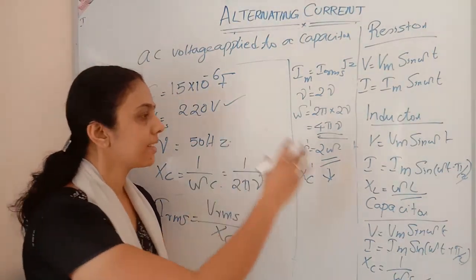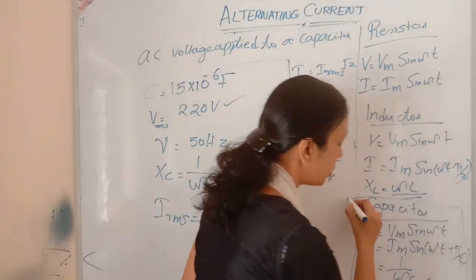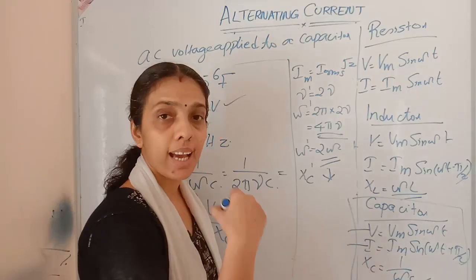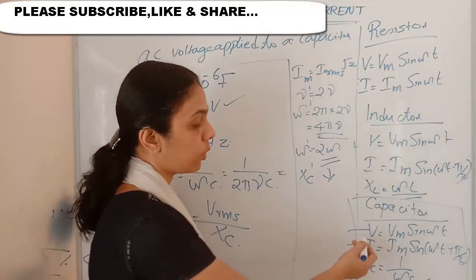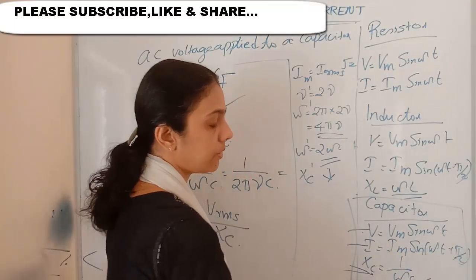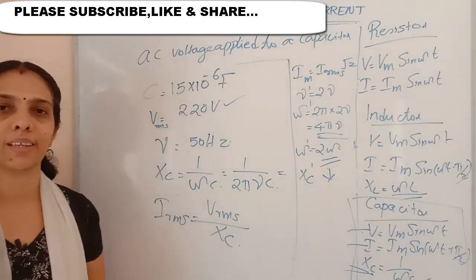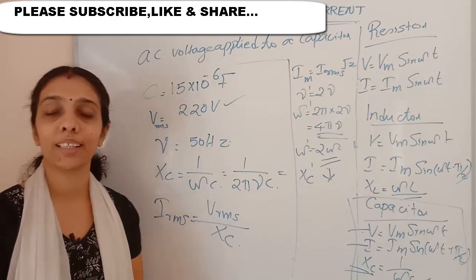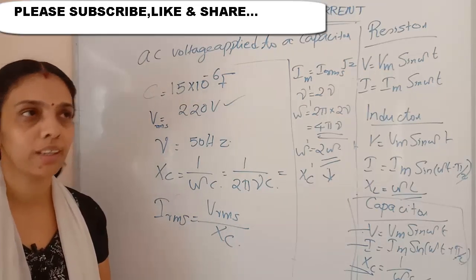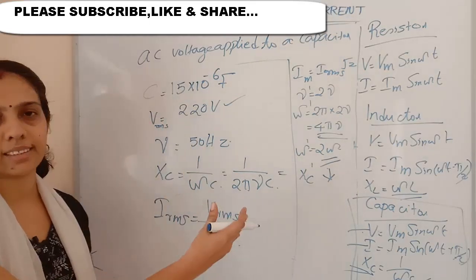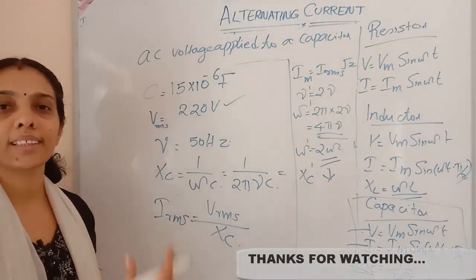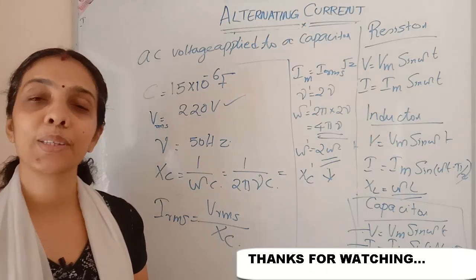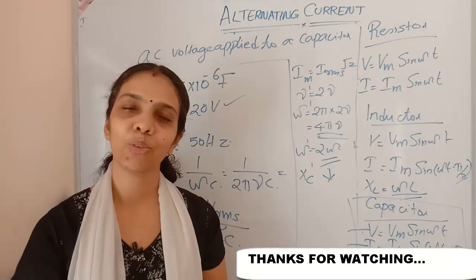That's all for today. The important points are: V equals Vm sin(ωt), the current leads the voltage by π/2, and capacitive reactance Xc equals 1/(ωC). In the next class we will cover the LCR circuit — inductance, capacitance, and resistance together. I hope it is clear. Please subscribe, like, and share. Thank you for watching. Bye.